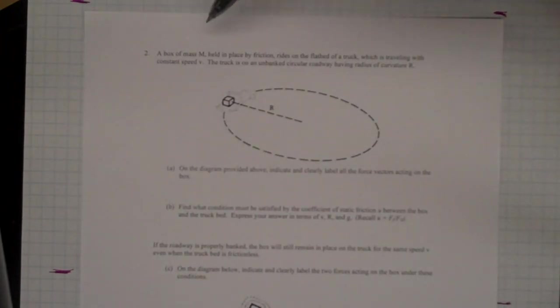First problem, box of mass M, held in place by friction, resting on the flatbed of a truck. The key idea here is, a couple key ideas. One is that the force that makes the box itself move in a circle is the inward-directed force of friction.